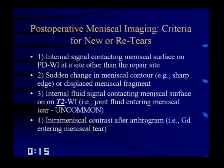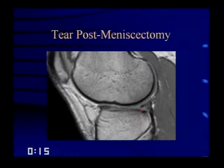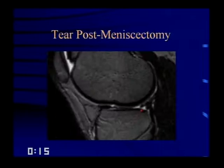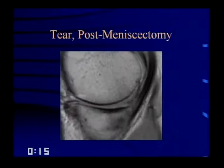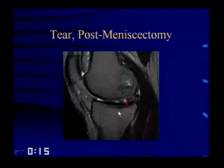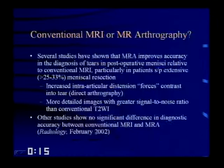Here's a post-meniscectomy case: there's a little signal abnormality in the posterior horn — is it a tear or healing tear? Looking at the T2-weighted image, there's fluid signal intensity going in there — that's abnormal, that's a true tear. Here's another: you can barely see the meniscus. On T2-weighted images, two fragments separated by a cleft of fluid signal intensity confirm a true tear. T2-weighted images are very useful in distinguishing true tears from degeneration.